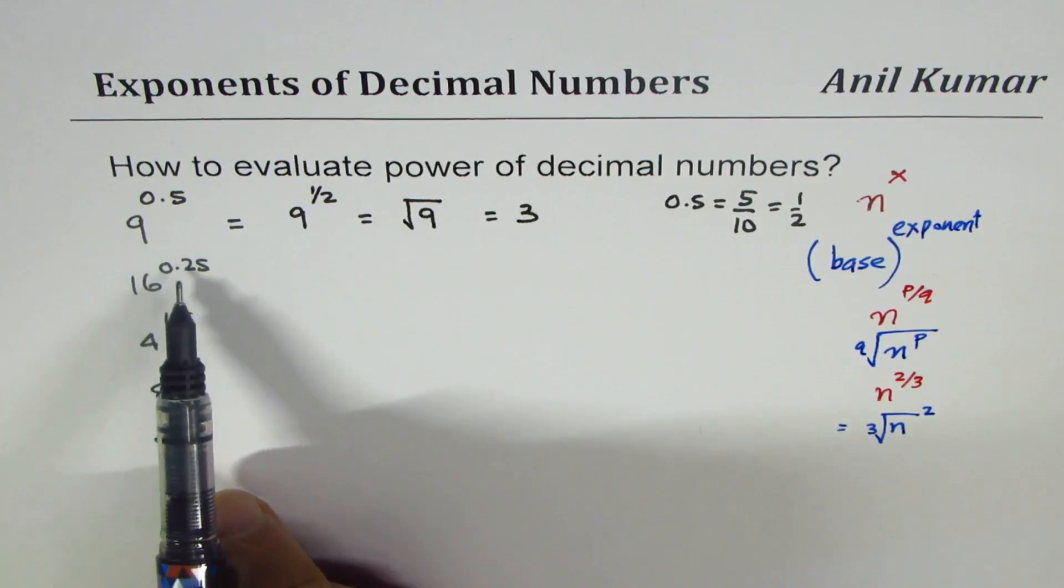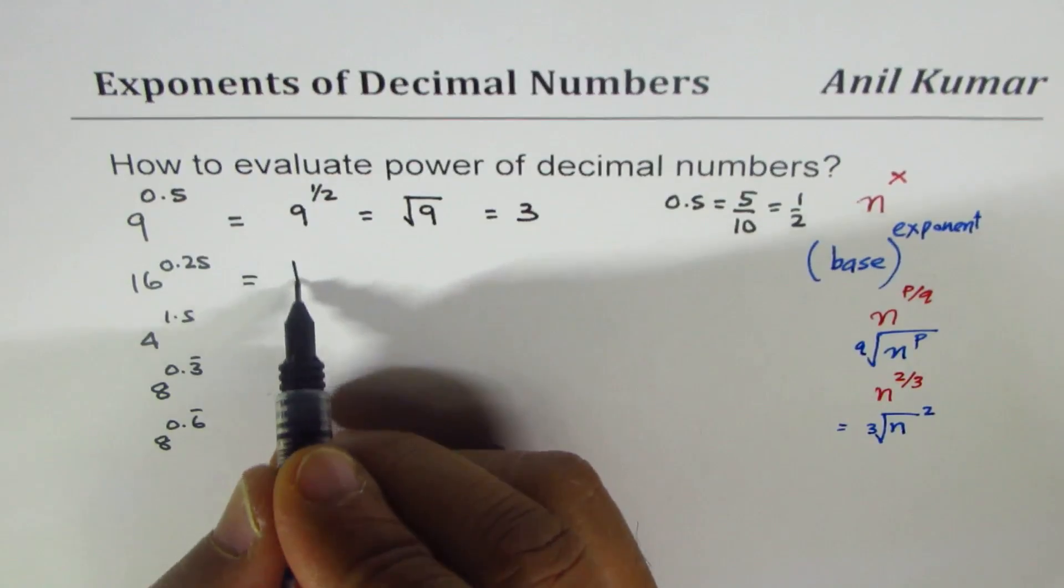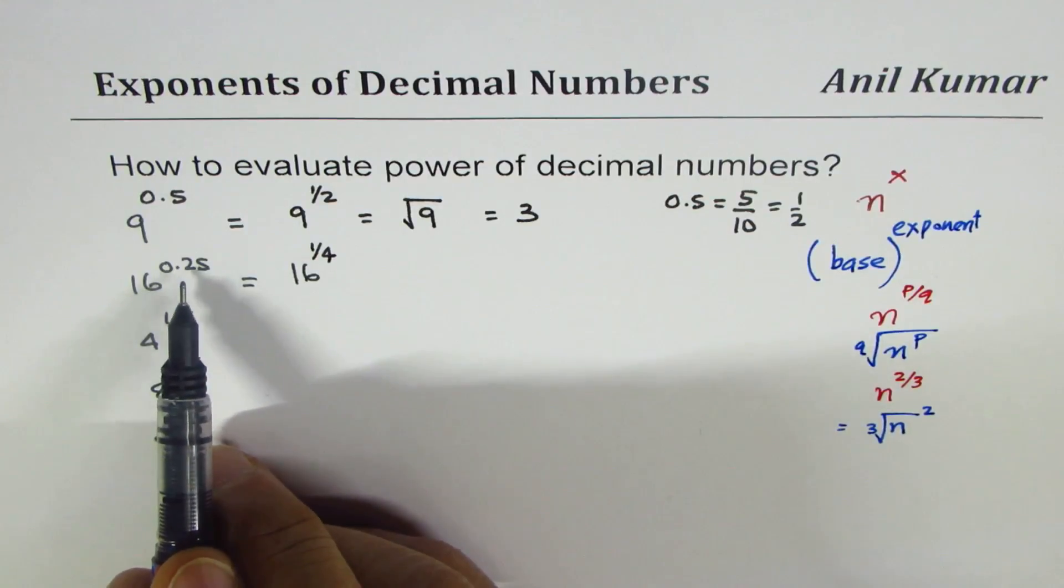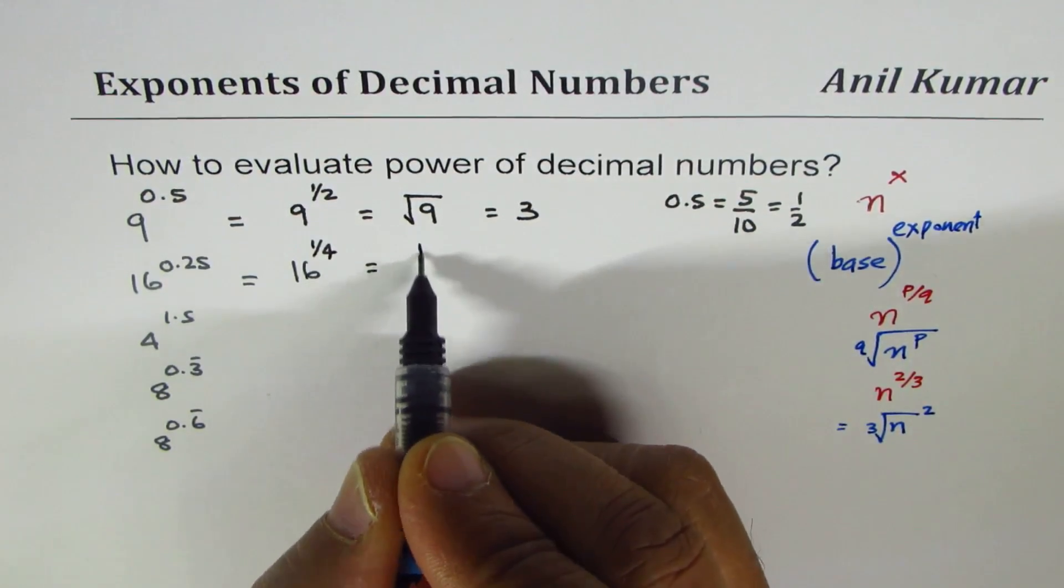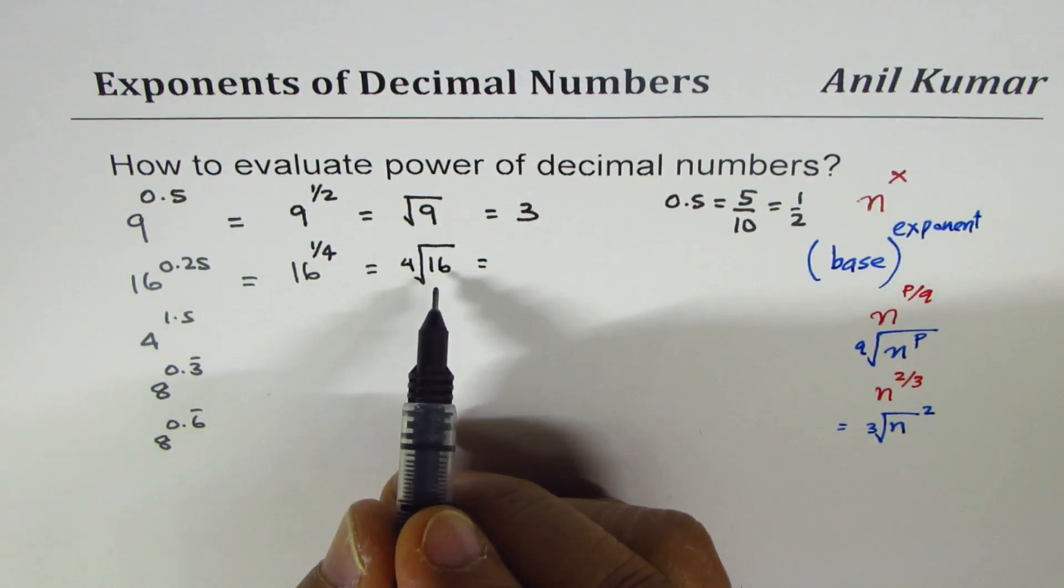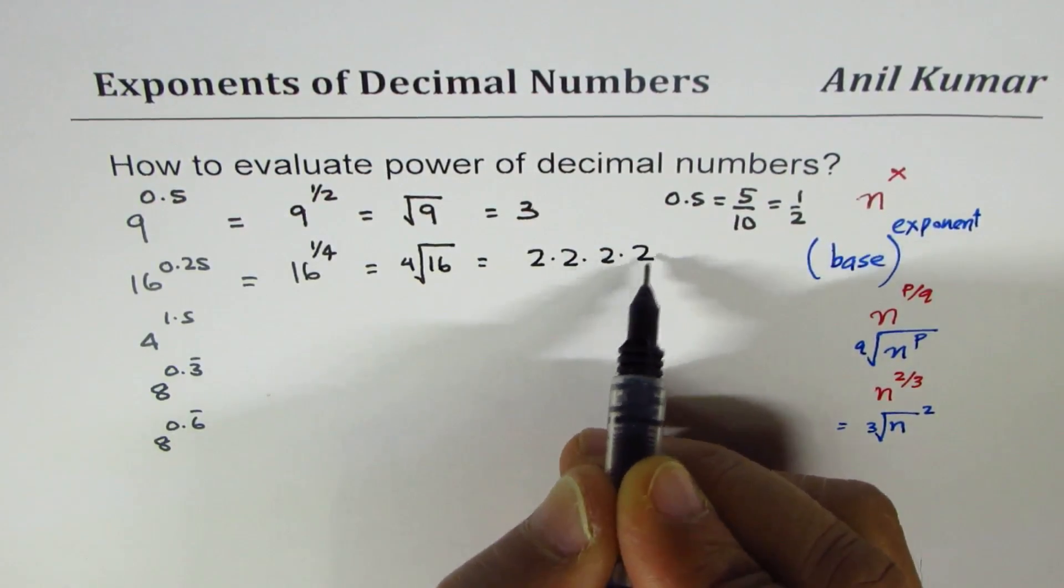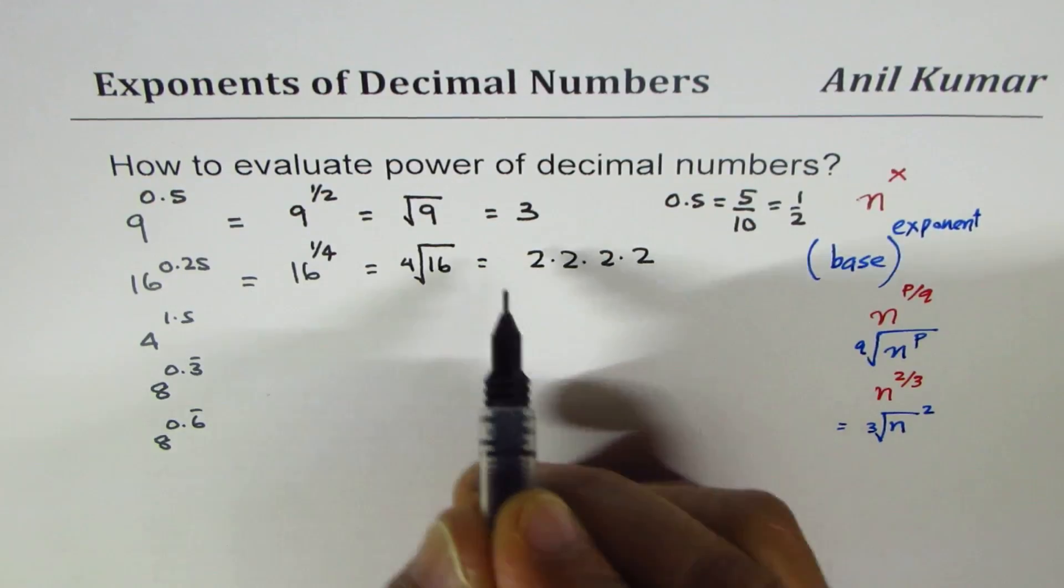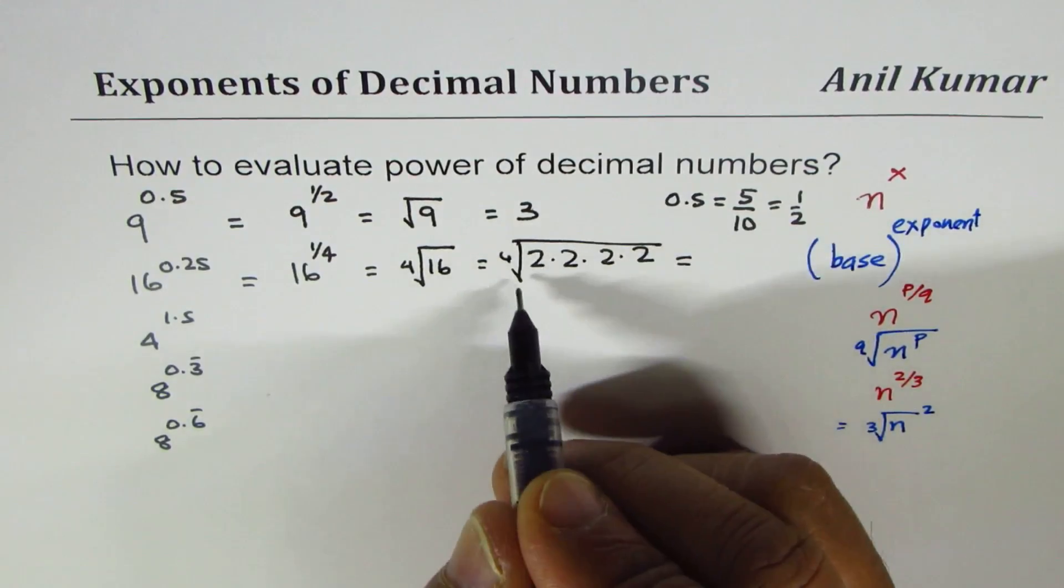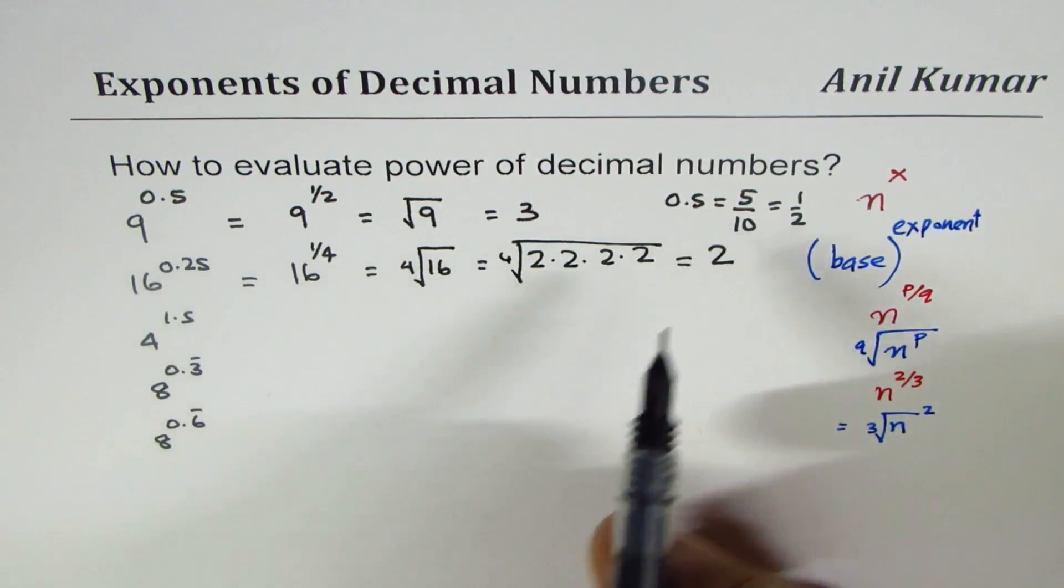Now let's get to 16 to the power of 0.25. 0.25 is a quarter, so we could write this as 16 to the power of 1 over 4. First step is to convert decimal to fractions, then we understand that we are looking for the fourth root of 16. Fourth root means if I write 16 as 2 times 2 times 2 times 2, and if I take the fourth root, since we have 4 twos, the fourth root will be equal to 2. So 16 to the power of 0.25 is equal to 2.